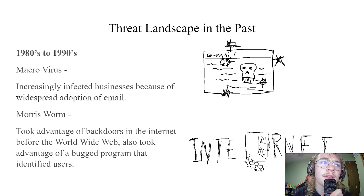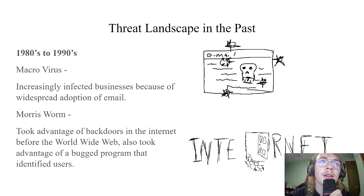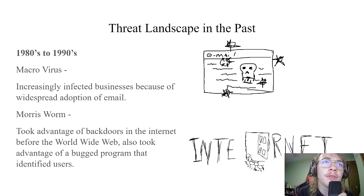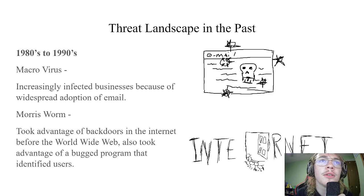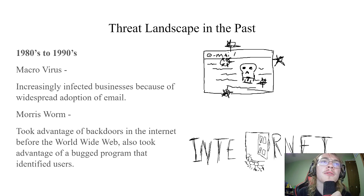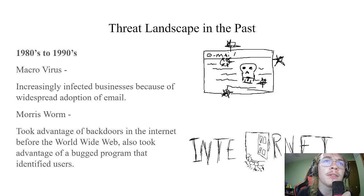Next up is the Morris Worm, created by Robert Tappan Morris, a student from Cornell University, which was released in 1988 — the first time malware was distributed through the internet. This malware mainly attacked computers using a specific version of the Unix OS, but had many attack vectors, which is why it spread so wide. One main attack used was a backdoor on the internet using the mail system and a bug in a program that identified users.